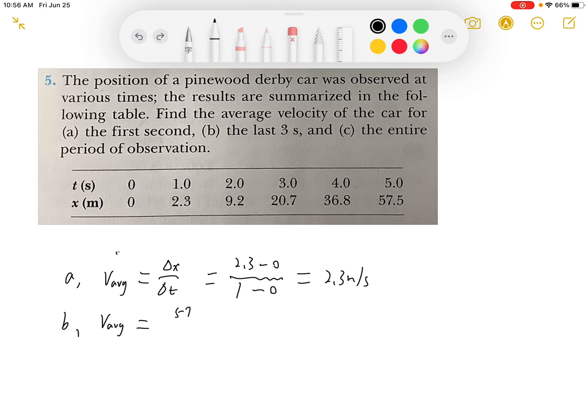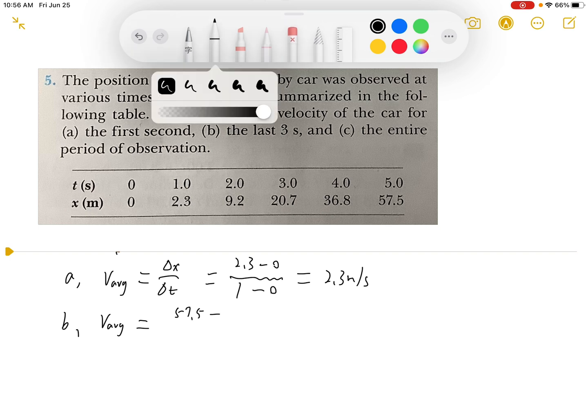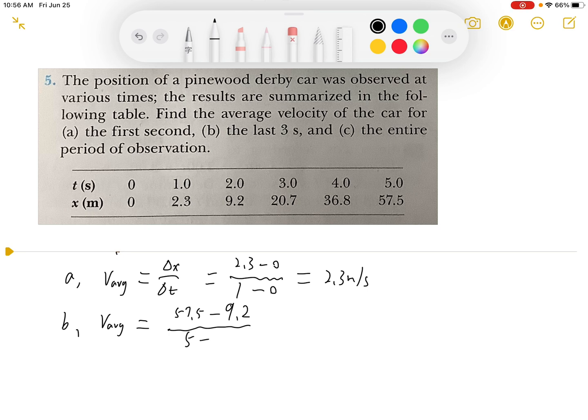57.5 minus 9.2 over 5 minus 2, which gives us an answer of 16.1 meters per second.